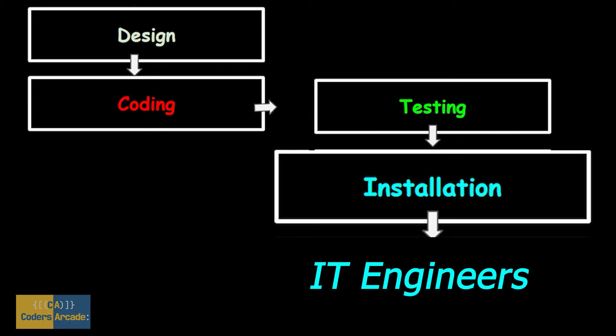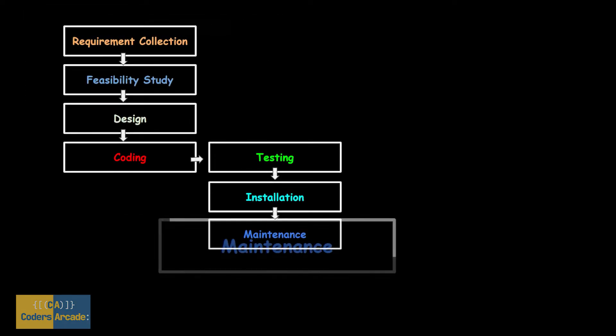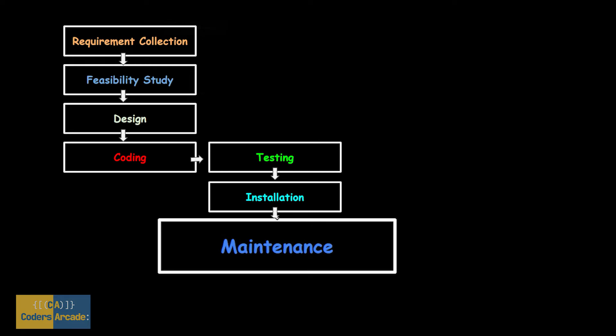Once after the installation is done, it comes to the Maintenance phase. Just like when you buy a phone you get a warranty, when you buy software you get a warranty too. That warranty period — how many months or years — will be decided. Once that warranty is exhausted, whatever maintenance is done should be paid for.